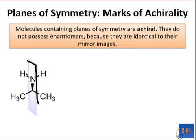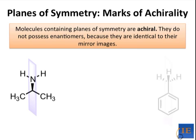Reflection through that plane would push this H over to here, this H would come back here, the methyl group on the left would go to the right and vice versa, and nothing on the plane would move — so the nitrogen and the carbon would just sit there, as well as the hydrogen implied in the back. This is a plane of symmetry of this structure.